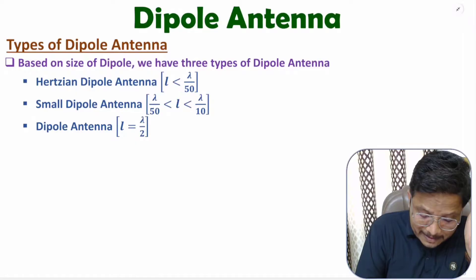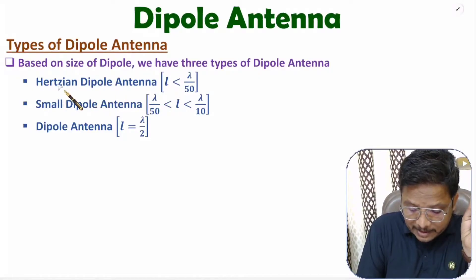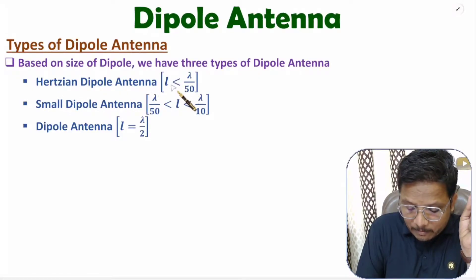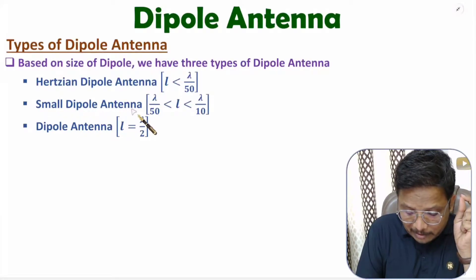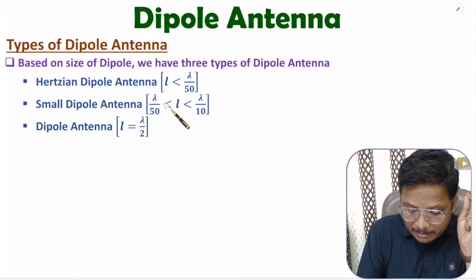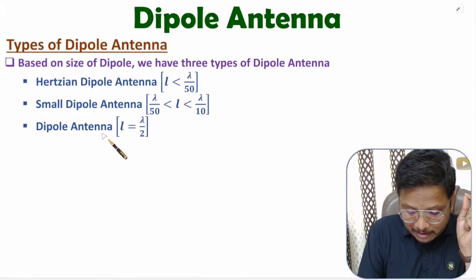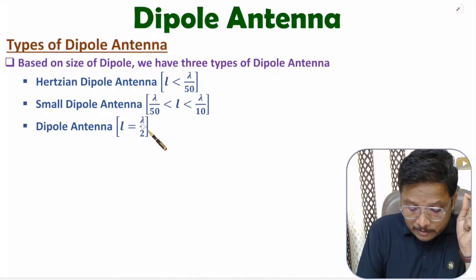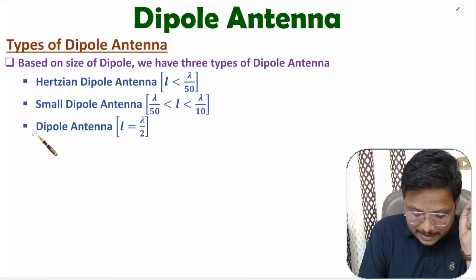The smallest size of dipole belongs to the Hertzian dipole. The size of the Hertzian dipole antenna is lower than lambda by 50. The second category is small dipole antenna, with size in between lambda by 10 to lambda by 50. The third category is basic dipole antenna, with size of lambda by 2. So based on size, we have three different types: Hertzian dipole, small dipole, and basic dipole.